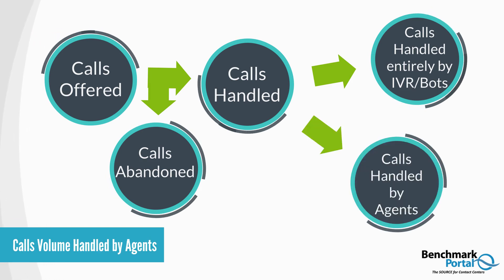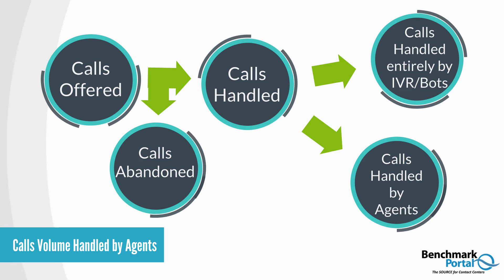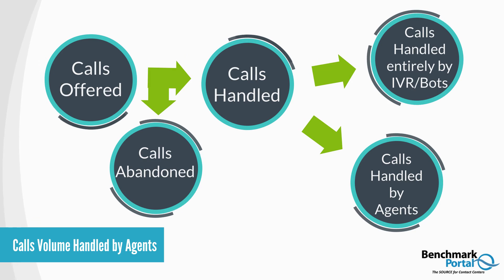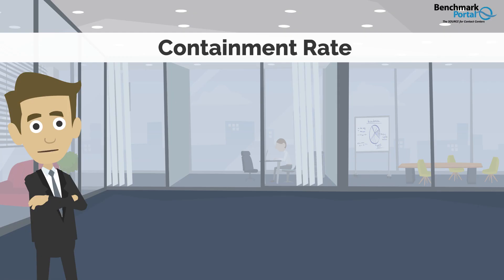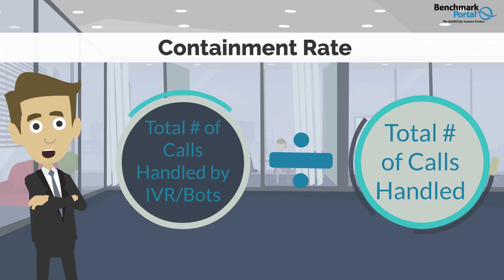The second category, of course, is the volume of calls handled by agents. These are calls that are routed to the agent queue either directly or following a failure of an automated system to resolve the caller's issue. The percentage of calls handled completely without a human agent is sometimes called the containment rate, and is calculated by taking the total number of calls handled by the IVR and other automated means divided by the total number of calls handled. This metric is an important efficiency or cost-related metric.